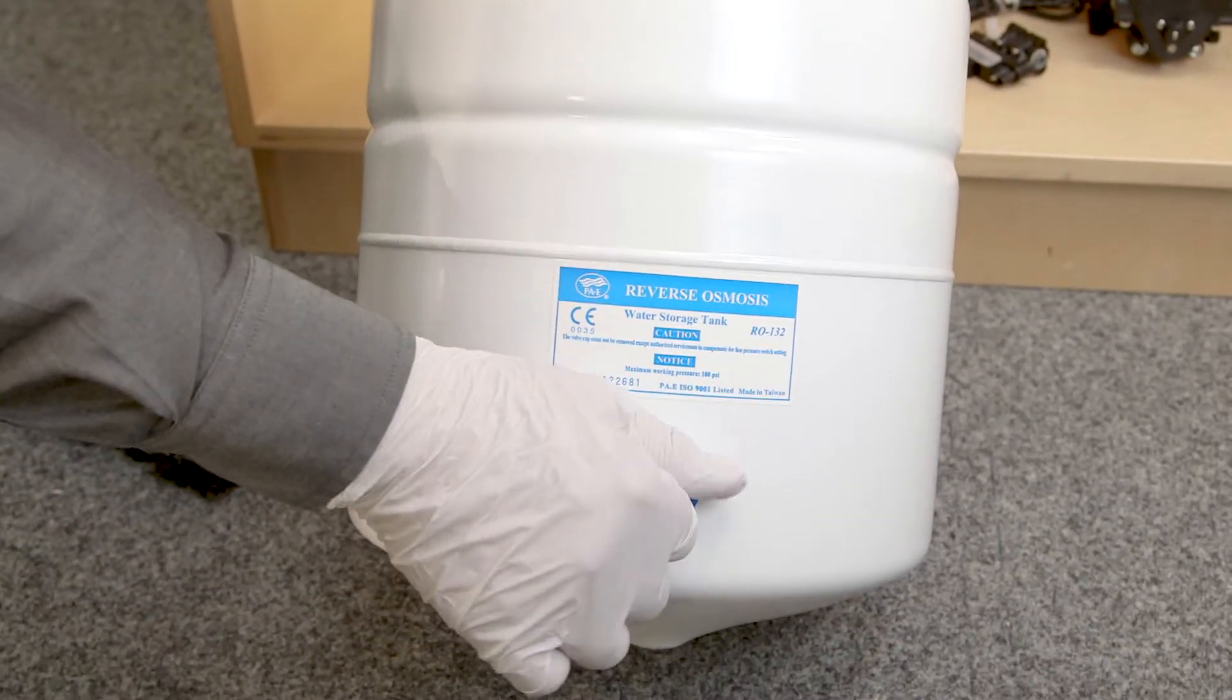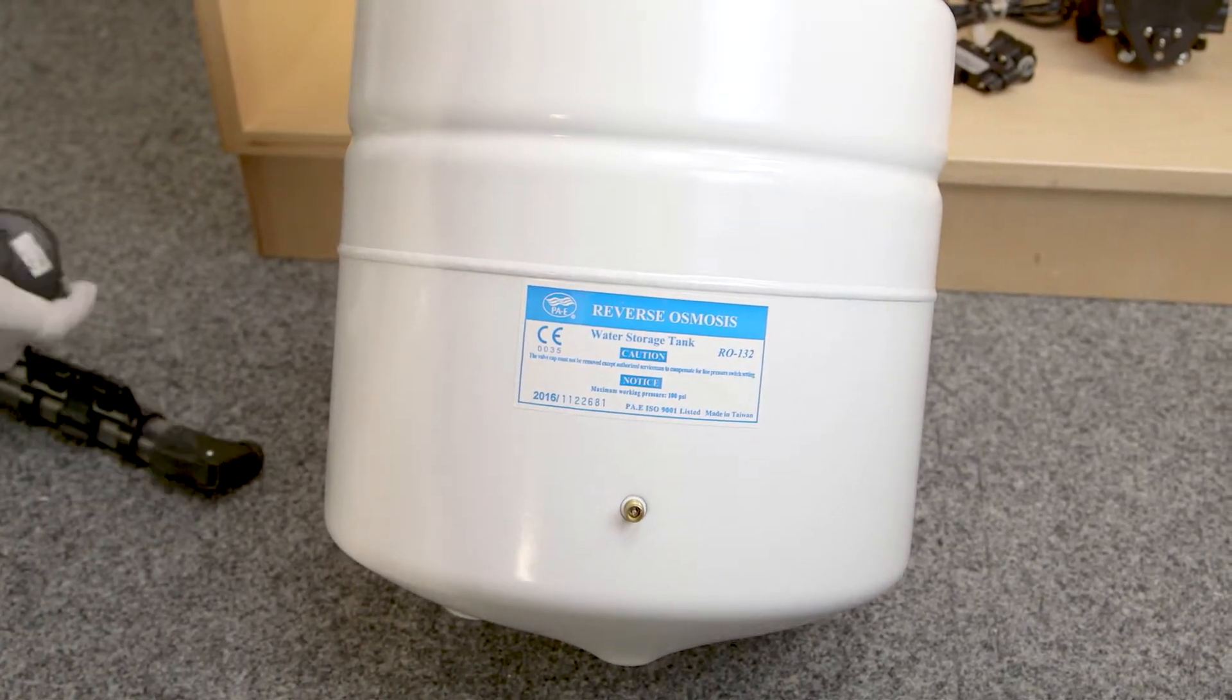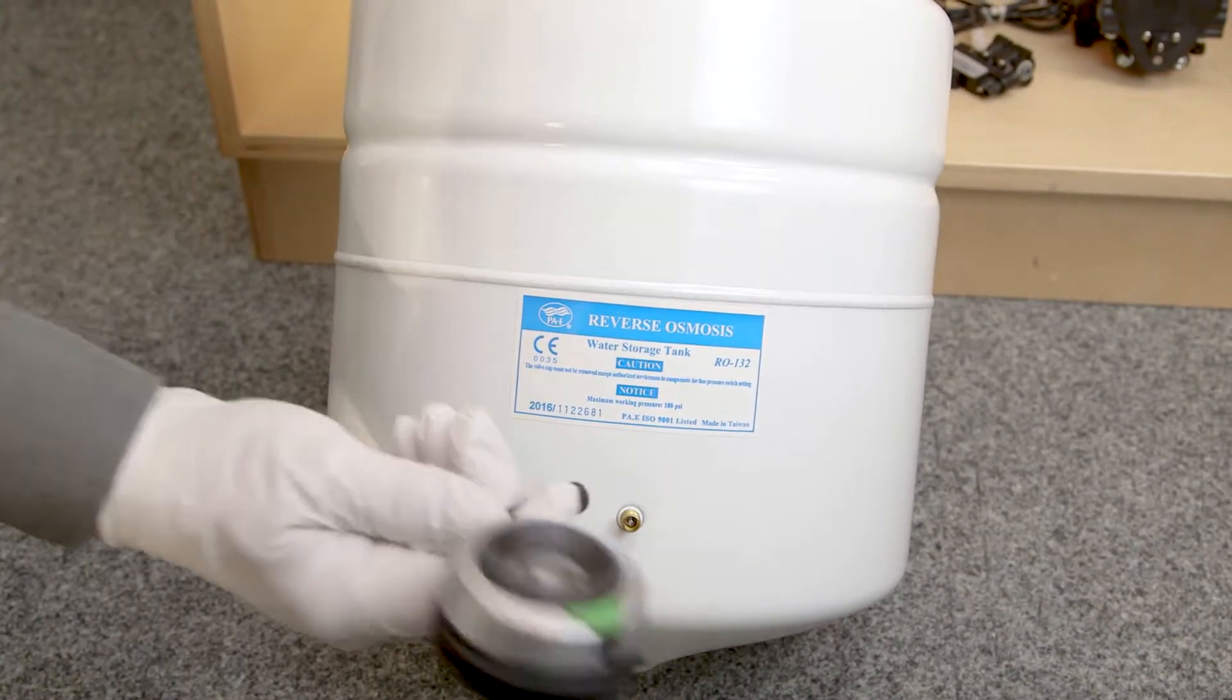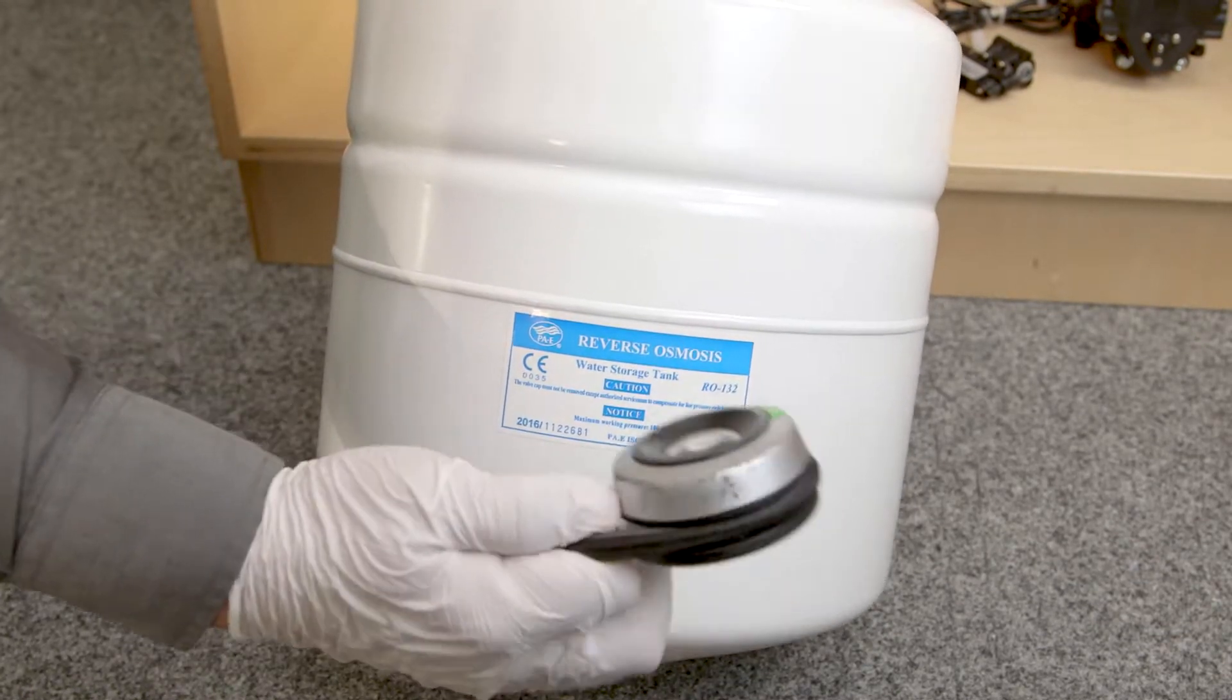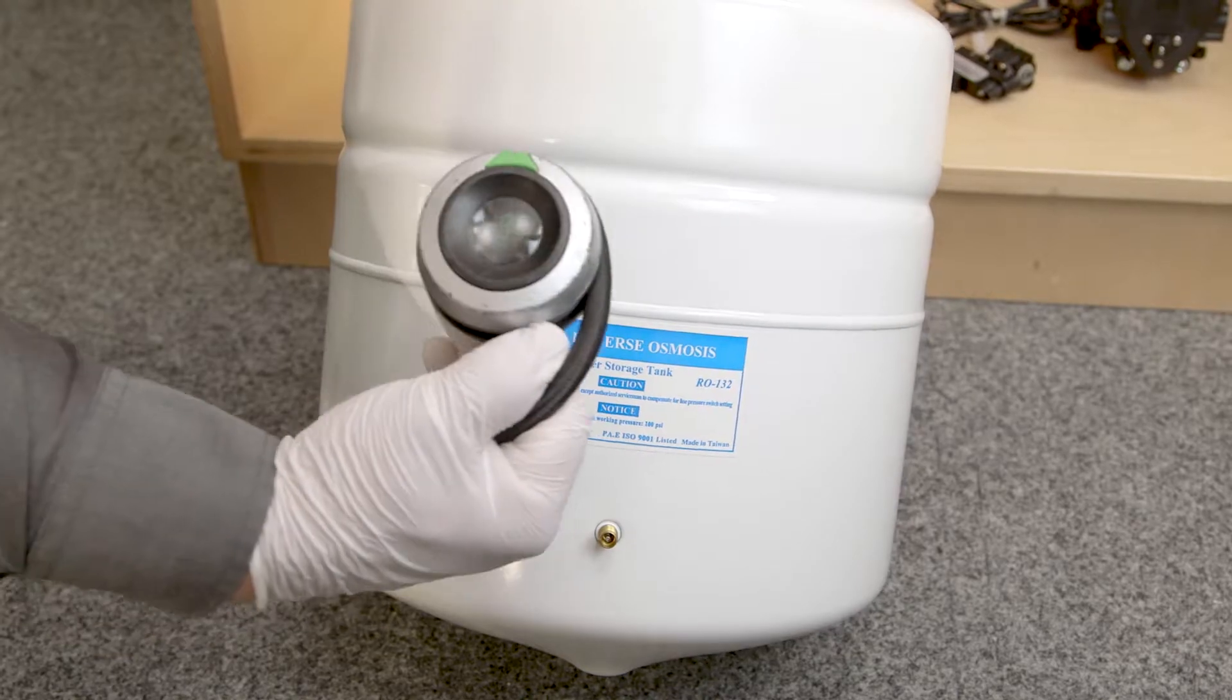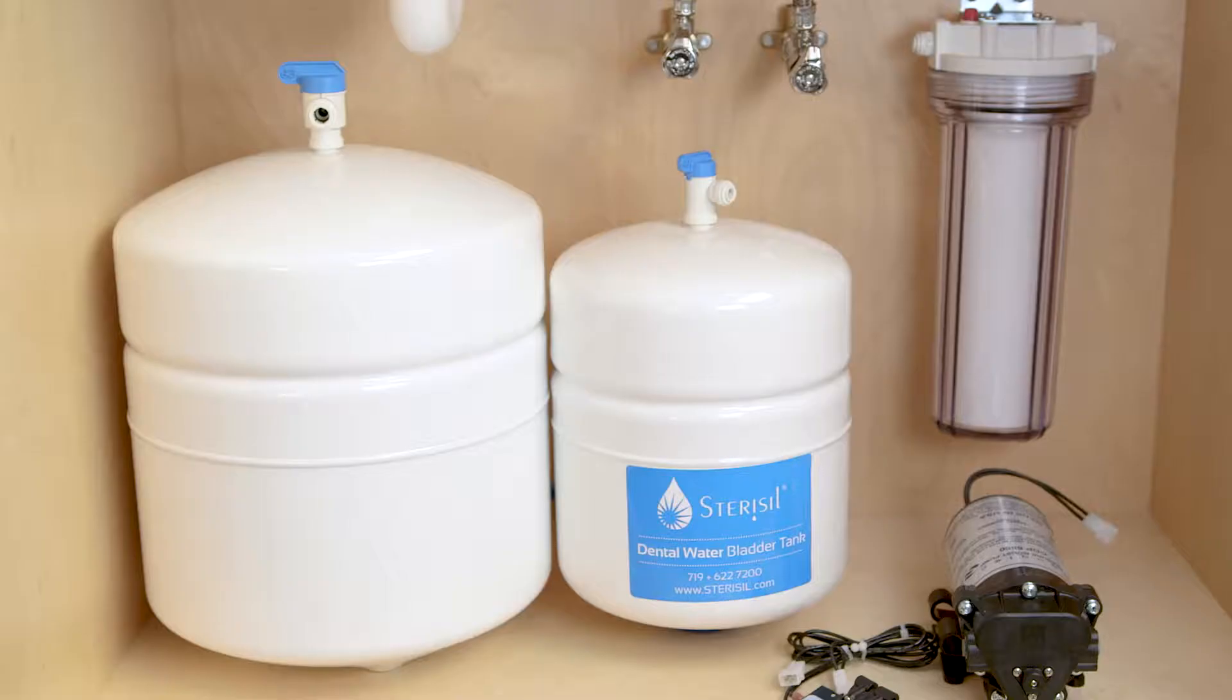On the tanks, you'll find a plastic blue cap. Rotate it counterclockwise to remove it, exposing the Schrader valve. Verify the pressure is between 8 and 10 psi. If they're not within that range, you'll need to add or remove air with your low volume air pump. Your tanks are now ready for plumbing.